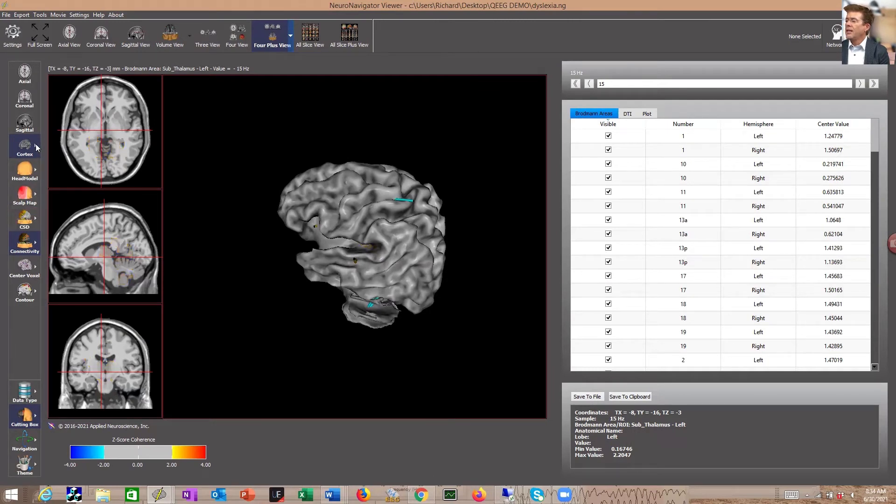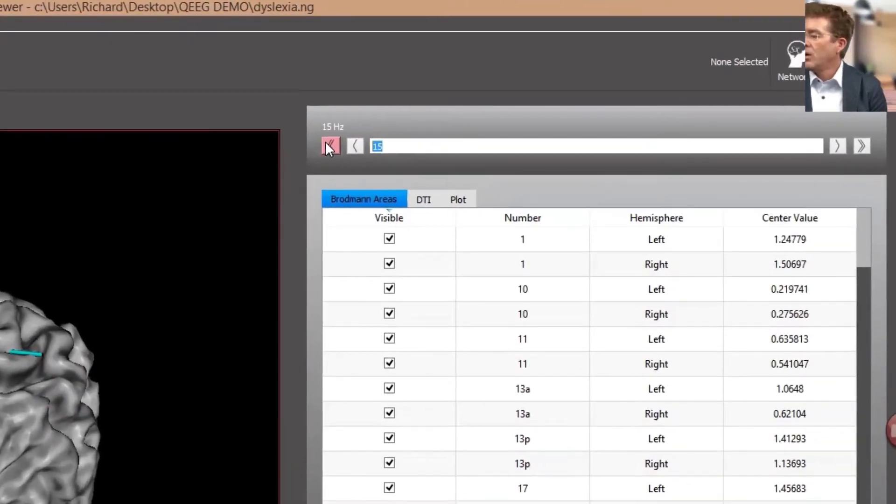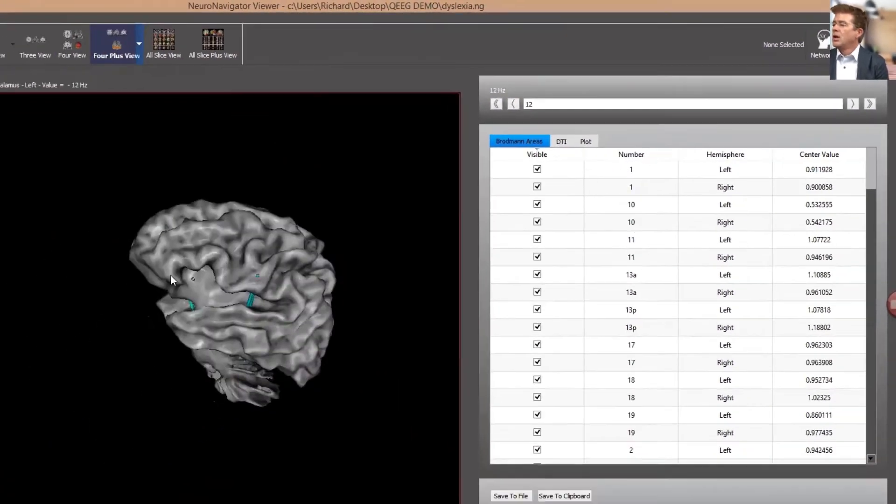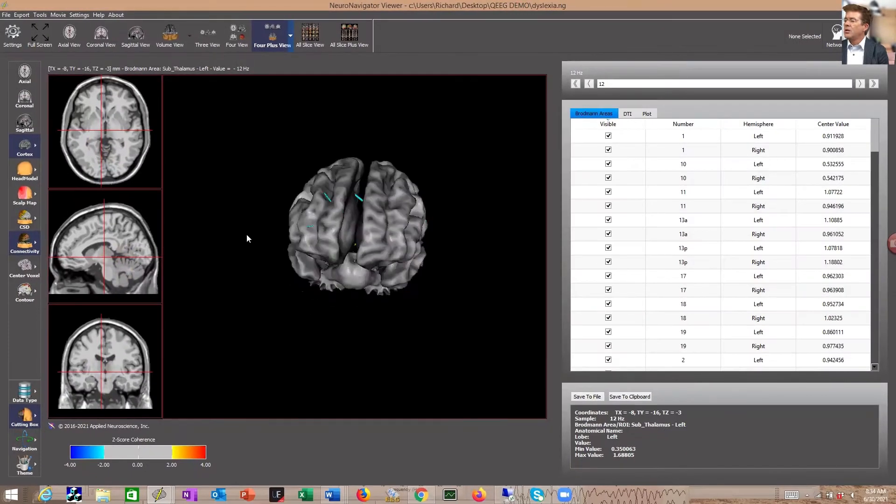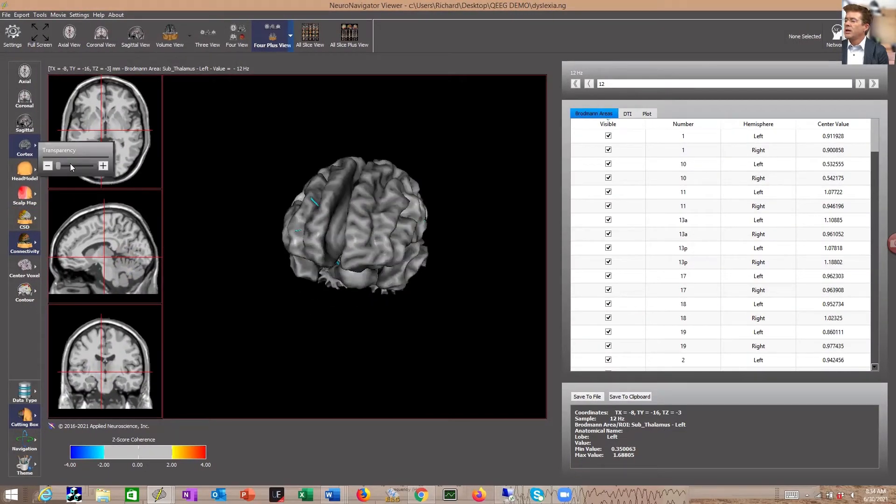Now, if we look at the connectivity, especially right around 12 Hz, we will see how his reading area is not developing as well as we would hope.